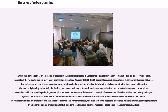Two of the best examples of these communities are Letchworth in Hertfordshire and Hampstead Garden Suburb in Greater London. In both communities, architects Raymond Unwin and Richard Barry Parker exemplify the elite, top-down approach associated with the rational planning movement by using the planning process to establish a uniform landscape and architectural style based on an idealized medieval village.